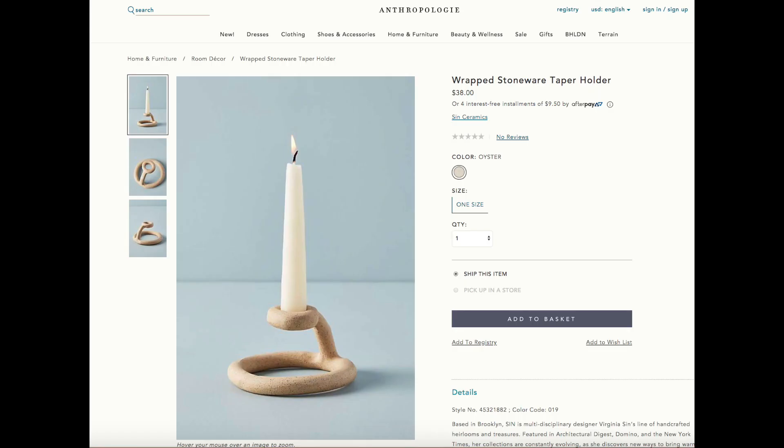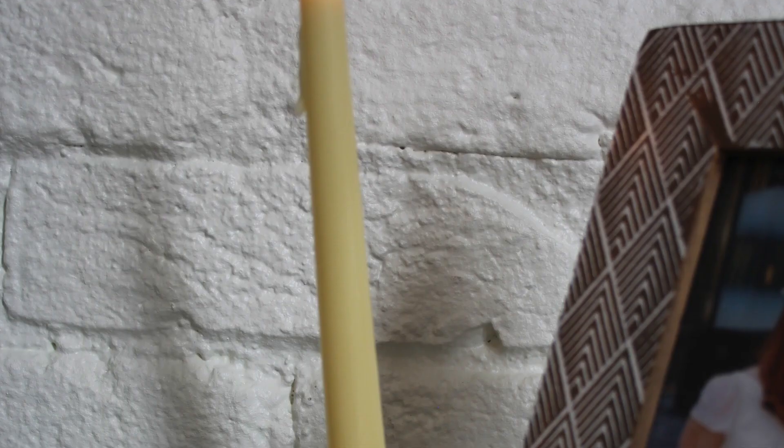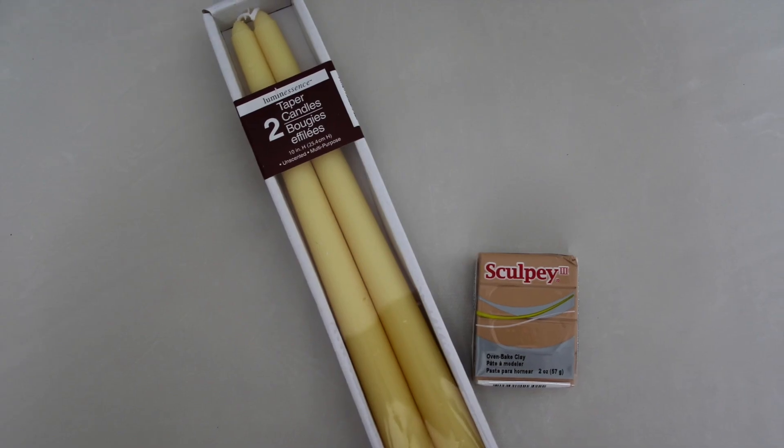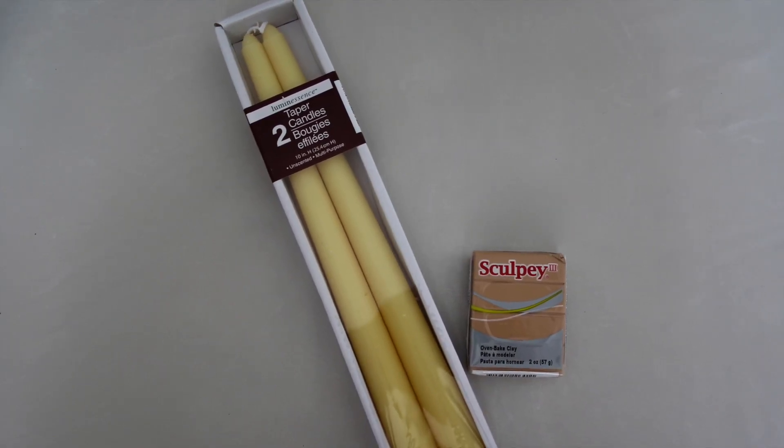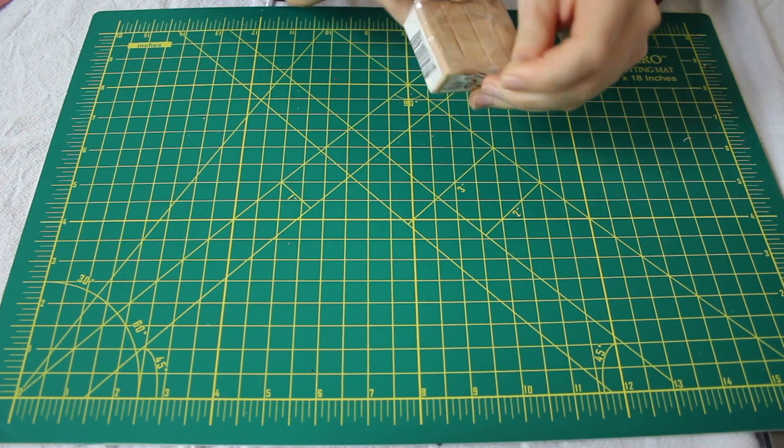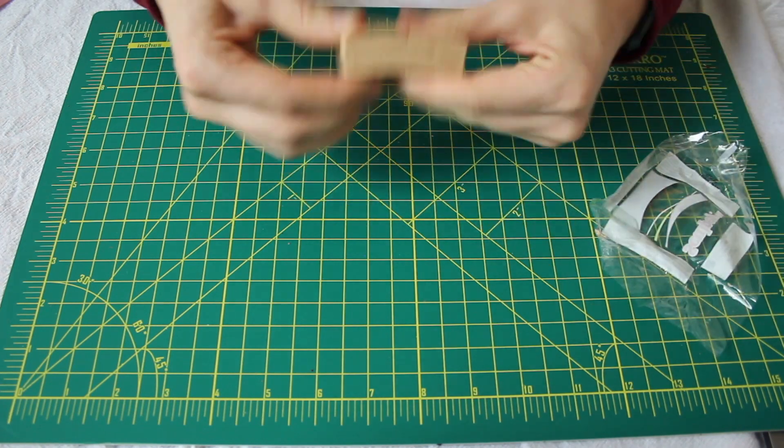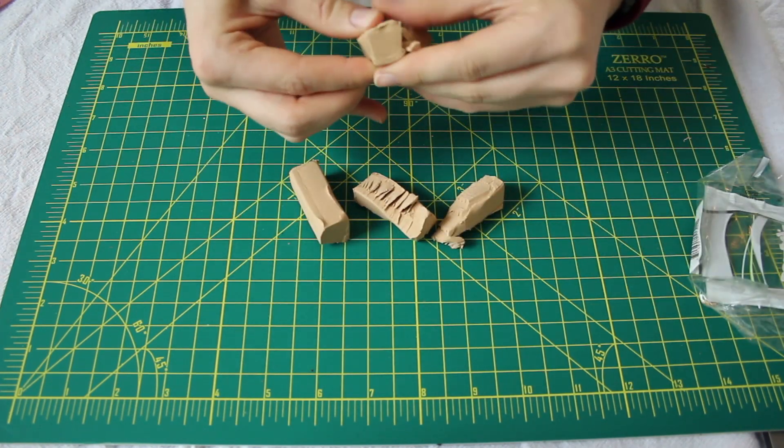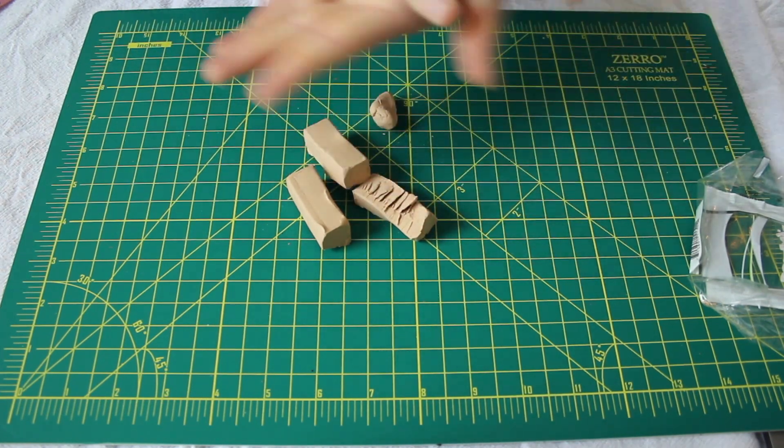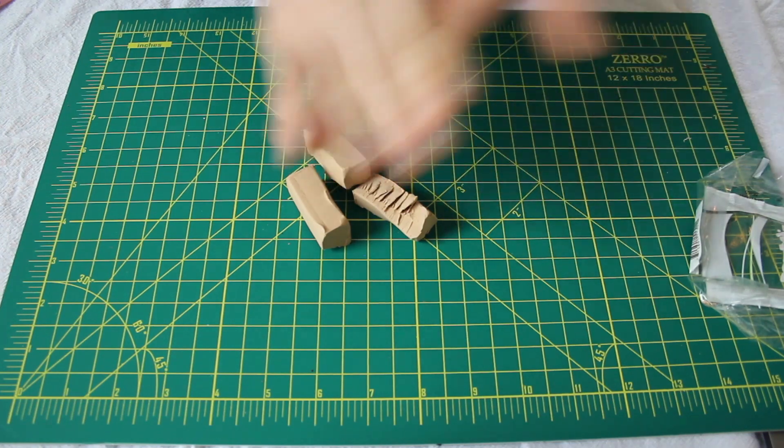This piece is a stoneware candle holder for $38 and we're going to recreate it with some Sculpey tan clay. I got these candles from the dollar store and the Sculpey tan clay from Amazon. First you need to warm up all the clay—just break apart the clay into smaller groups and roll it around until it's a little bit more malleable.